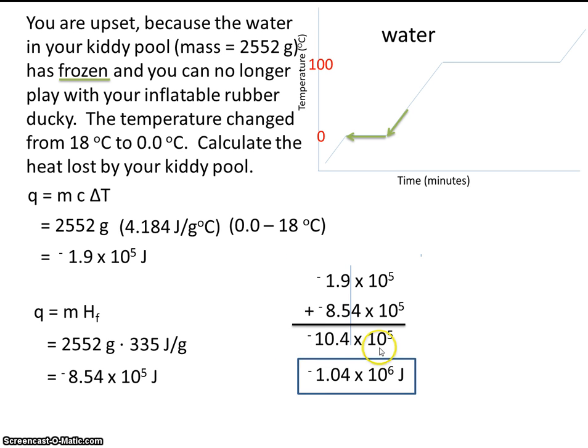Our final answer to the correct number of sig figs is negative 1.04 times 10 to the 6th joules.